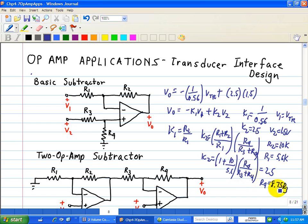And if we choose R3, let's say 1k, then R4 would be 8.75k. So if R3 is 1k, then R4 would be 8.75k, and that concludes this first design.